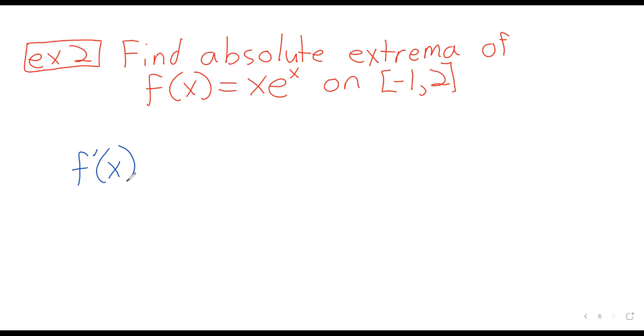To find the absolute extrema, we need the critical values. Now that we've done one example, we'll maybe write down fewer words on the whiteboard. So we need the critical values. To do that, we'll find the derivative, ask when it exists, and ask when it equals zero. Remember, you have to use the product rule because you have x times e^x. So the derivative of x is 1 times e^x plus x times e^x.